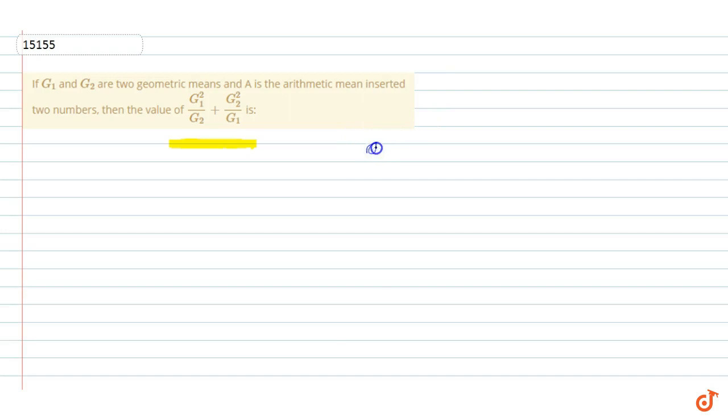Let's say the first number is a and the second number is b. So we have two numbers, a and b. Now we need to find the value of g1 square by g2 and g2 square by g1.